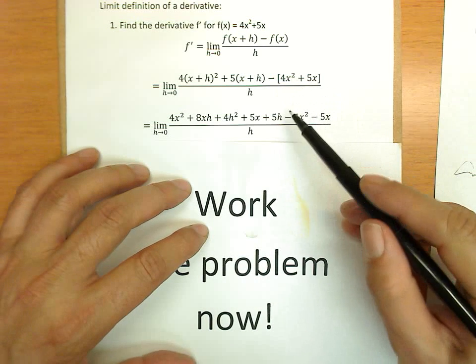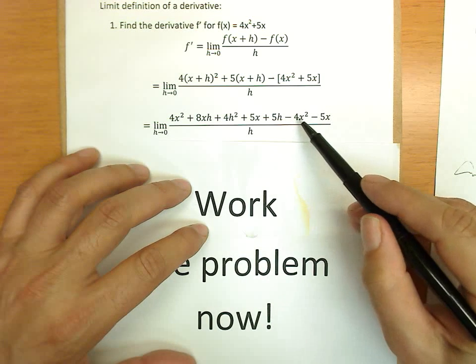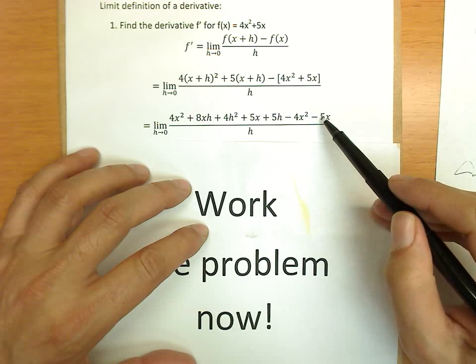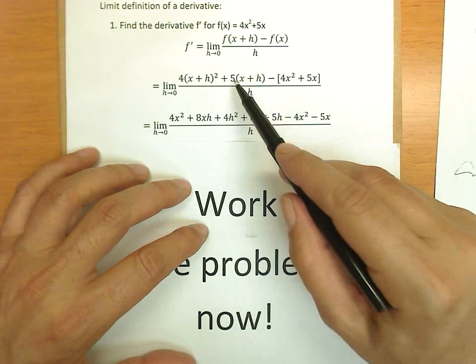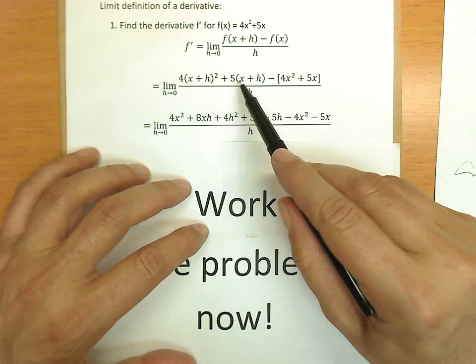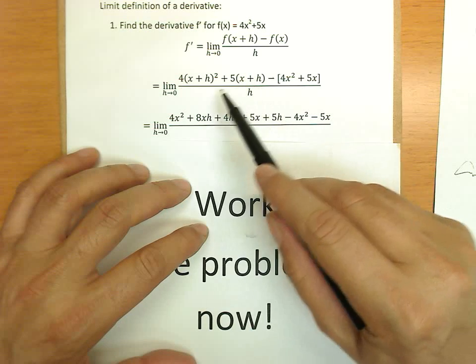So, now we're going to remove the parentheses by some simplifications. On the end here, the easiest one is the negative distributes to both: -4x² and -5x. 5x and 5h by distributing the 5 multiplied here.